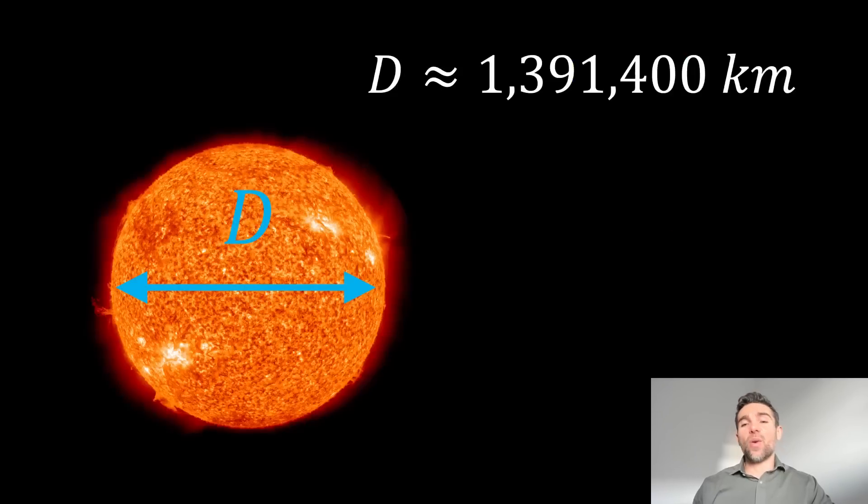If we do that, we end up with just under 1,400,000 kilometers for the diameter. Now obviously it depends which way around because the Sun is not perfectly spherical and is wider at certain parts than other parts. But with this method we get approximately this value.